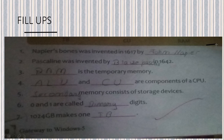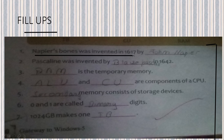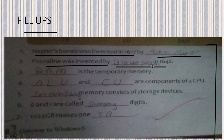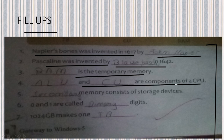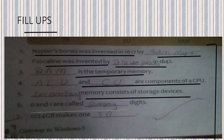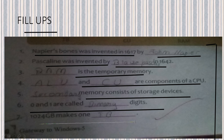Now we are going to fill in the blanks. Napier's Bone was invented in 1617 by John Napier. Pascaline was invented by Blaise Pascal in 1642. RAM is a temporary memory. ALU and CU are components of CPU. Secondary memory consists of storage devices. 0 and 1 are called binary digits, and computer can only understand binary language. 1024 GB makes 1 TB.